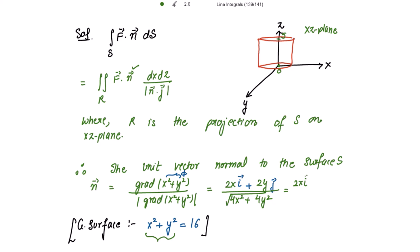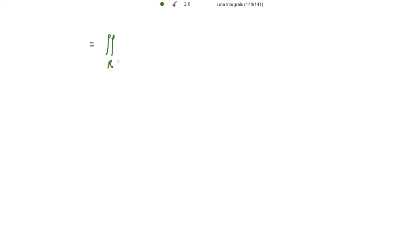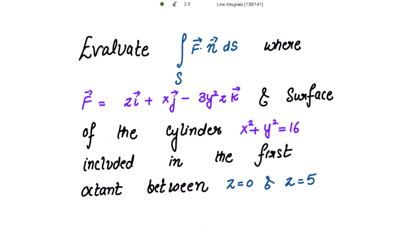This simplifies to 2x i + 2y j. Taking √4 = 2 common from the denominator, we get 2√(x² + y²). Since x² + y² = 16, √16 = 4. Taking 2 common from the numerator gives (x i + y j), and the 2s cancel, giving n vector = (x i + y j) / 4. Now substituting this value of n vector, the integral becomes a double integral over the projection R, where F vector is z i + xz j − 3y²z k, taking its dot product with n vector = (x i + y j) / 4.